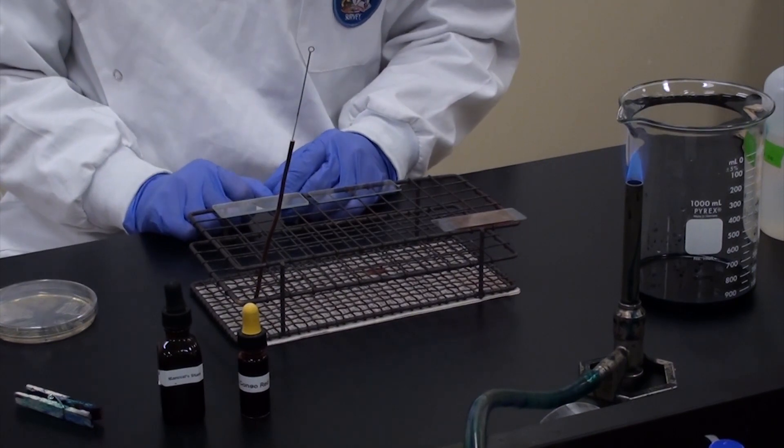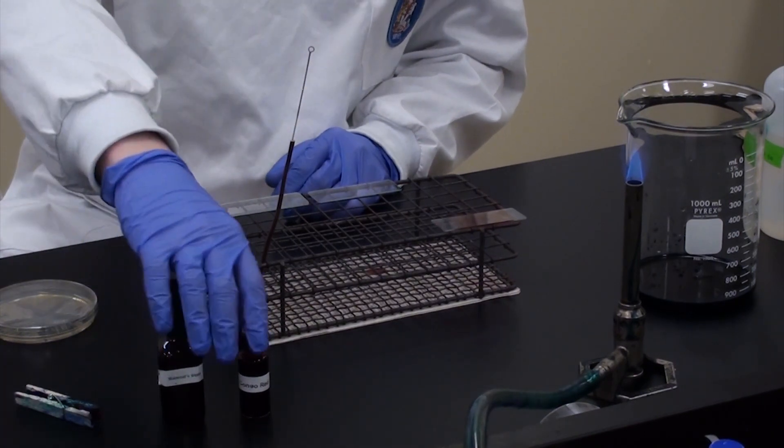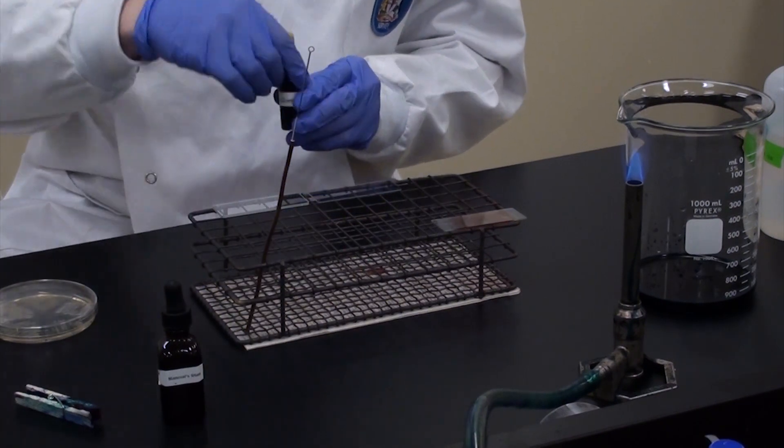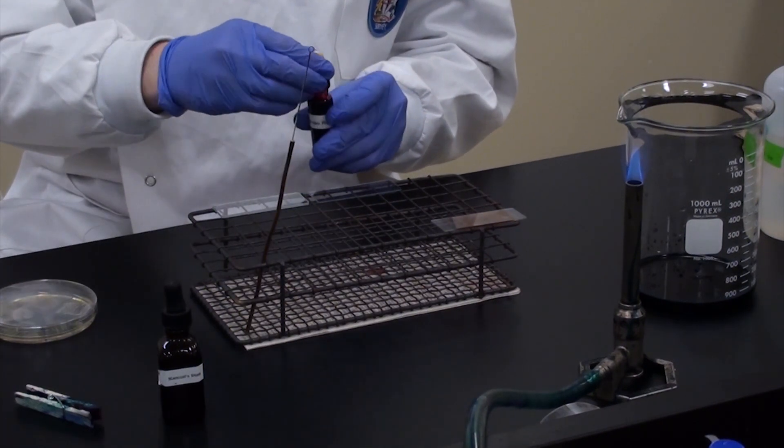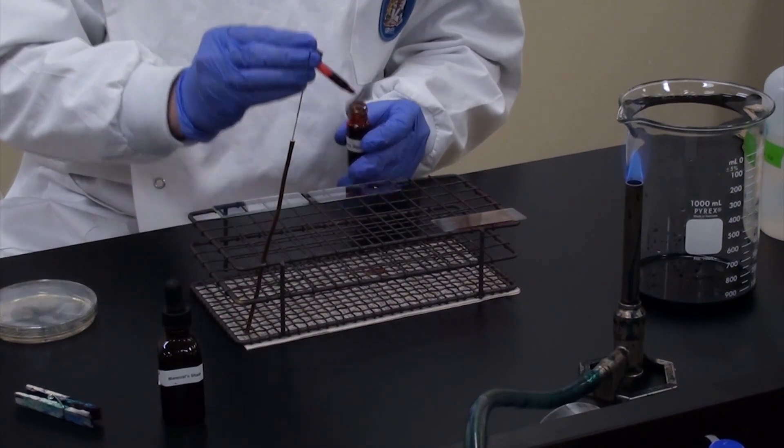Okay, so we're going to start it just like we did with the negative stain. First we're going to take our Congo red and apply a swift and small drop to our slide. As such. Awesome.